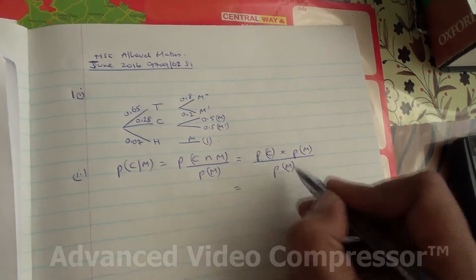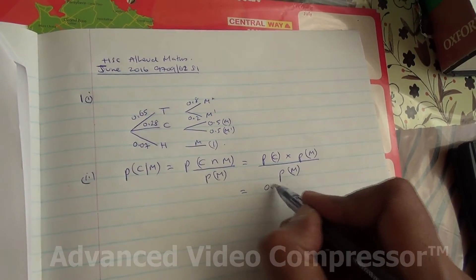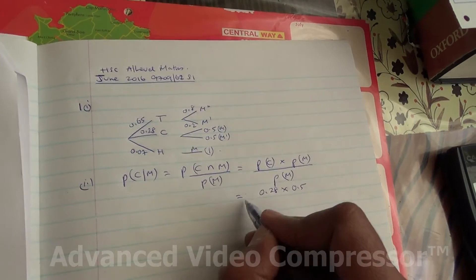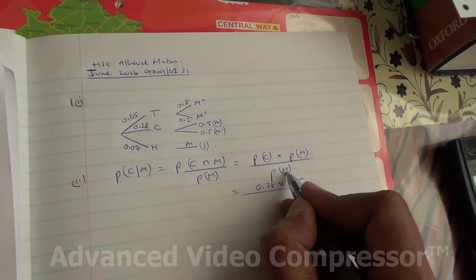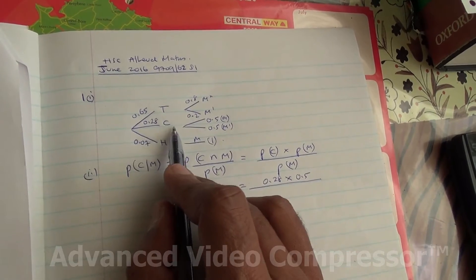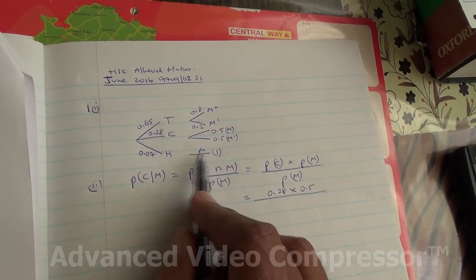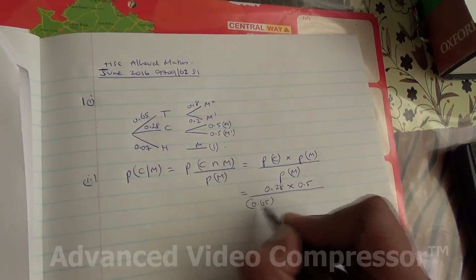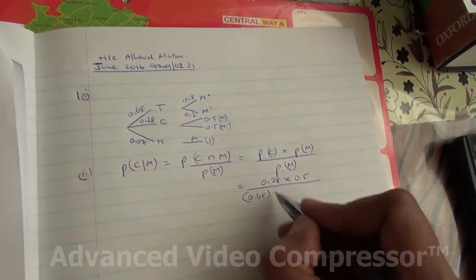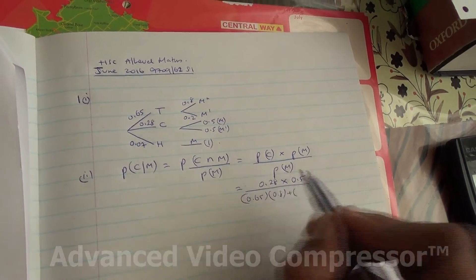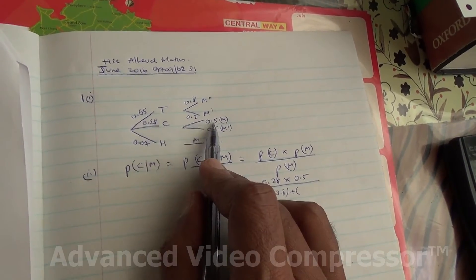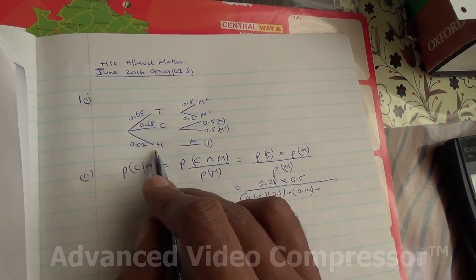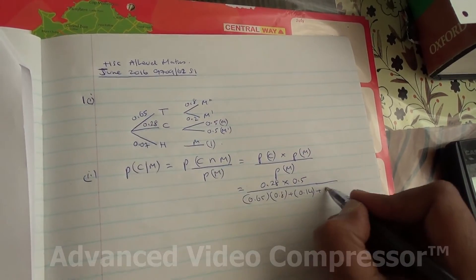That's going to be: probability of coffee times probability of having milk at the same time, divided by the probability of milk. So coffee is 0.28 times milk 0.5, divided by the probability of having milk. Milk only comes from: tea with milk, coffee with milk, hot chocolate with milk — so we've got three probabilities: 0.65 times 0.8, plus 0.28 times 0.5, which is 0.14, plus 0.07 times 1, which is 0.07.